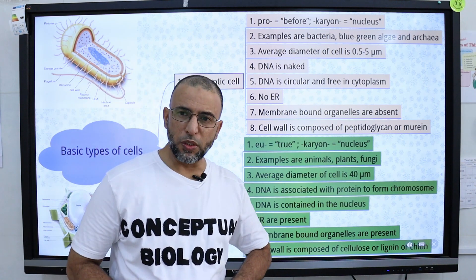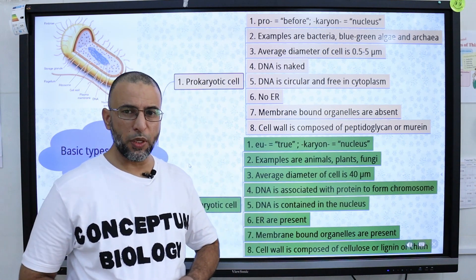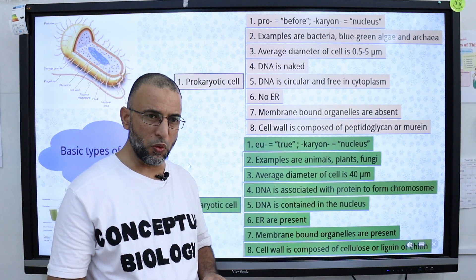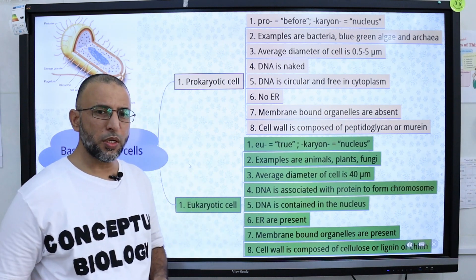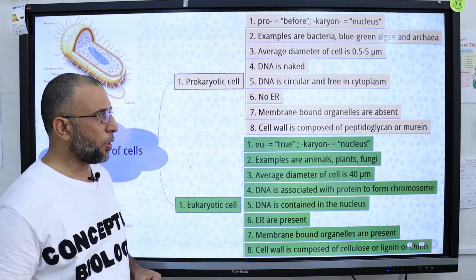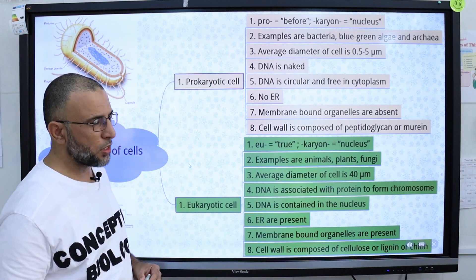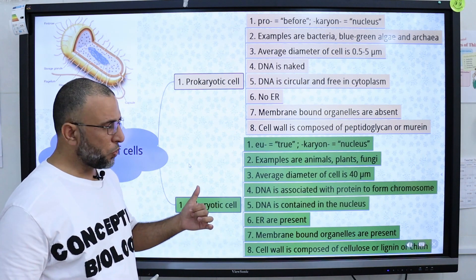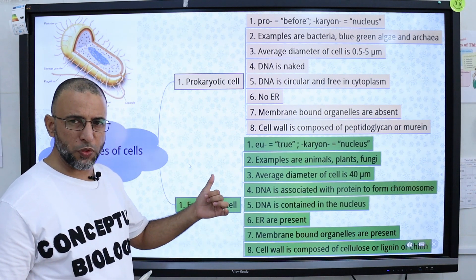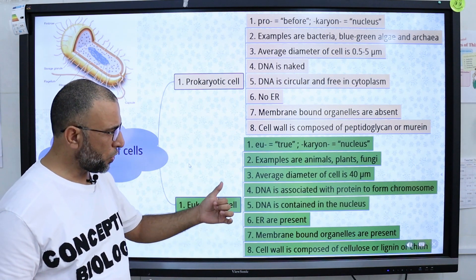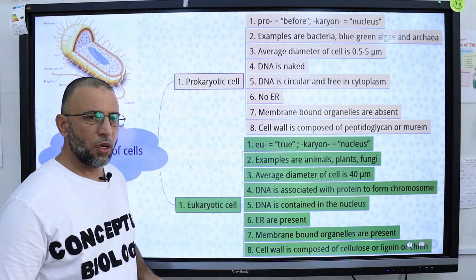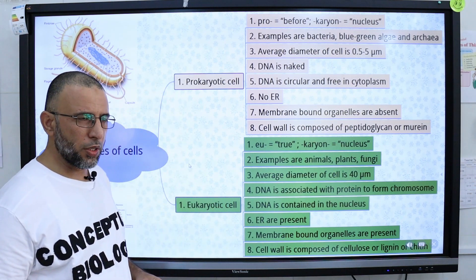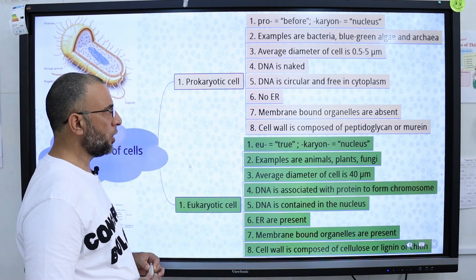The word prokaryotes comes from Greek words — 'pro' means before, 'karyon' means nucleus — and prokaryotic cells are represented by bacteria, blue-green algae, and archaea. The word eukaryote comes from Greek words meaning 'true nucleus,' and eukaryotic cells are represented by animals, plants, and fungi.